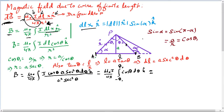Now let's see what dL cross r-hat is. dL cross r-hat is dL times r times sine of alpha, where alpha is the angle between the conductor and the vector r. So sine of alpha equals the opposite side, which is a, over the hypotenuse, which is r.